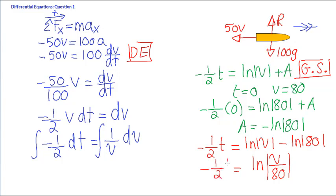Minus a half t. Minus a half t. Then, by the laws of exponential function, we can see that E to the power minus half t is equal to V over 80. Therefore, the final expression for the velocity will equal V equals 80 E to the minus t over 2. That's an equation for the velocity of the torpedo with respect to time.